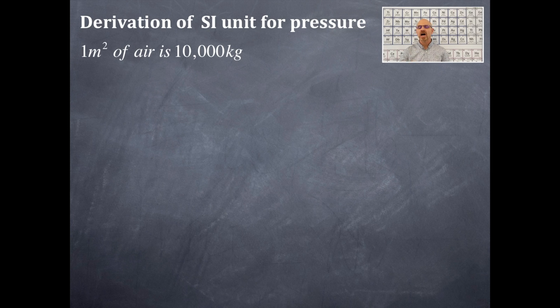One meter square of air is 10,000 kilograms. If you were to take the Earth and take one square meter of air, that would have the mass of 10,000 kilograms. From this information, we're going to derive the standard international unit for pressure.